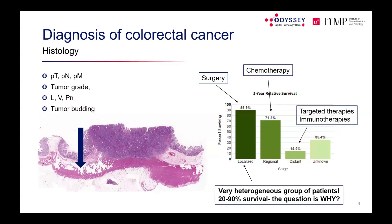Colorectal cancer diagnosis is based on histology, with tumour staging, grading, and a phenomenon called tumour budding, which is now part of diagnostic reporting recommendations. Buds are found very typically around the invasion front of the cancer.